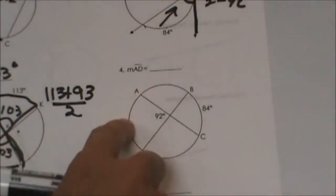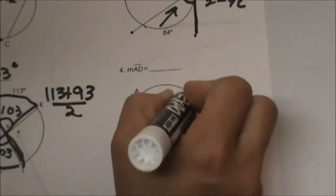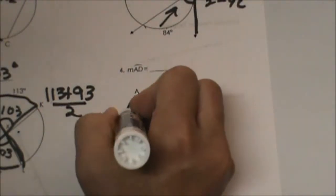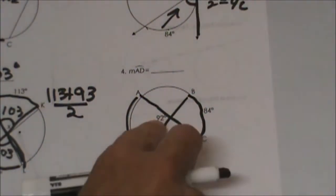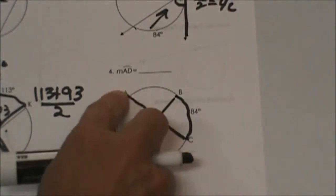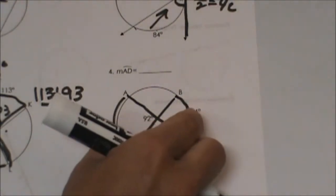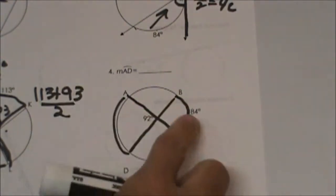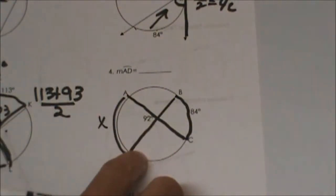We are looking for AD. Let's look at the bowtie rule here. This time we are given the inside angle and we have to find the arc. Remember we add these two arcs together and divide by 2 to get the inside angle. That means I am going to have to call AD X because I don't know that.